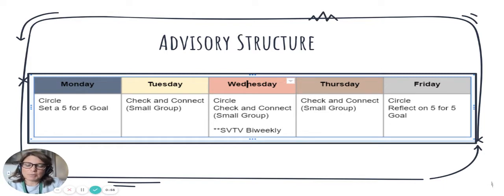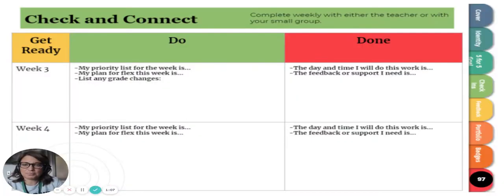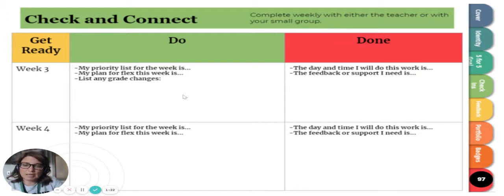On Tuesday, Wednesday, and Thursday, we will have check and connect time. Learners will be in small groups, checking in with their teacher and peers on a regular basis around academics and social-emotional learning. This helps them develop organization and executive functioning strategies. They will think about their priority list, their plan for flex time, any grade changes, and when and how they will get their to-do list accomplished, as well as any feedback or support they need.